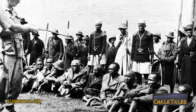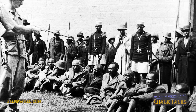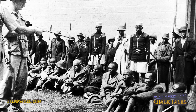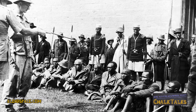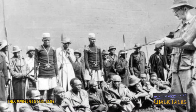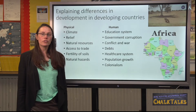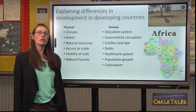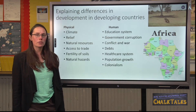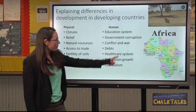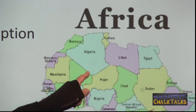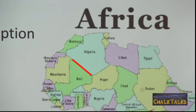One human factor that has made it difficult for many developing countries is their history. For example, modern-day Ghana was colonised by Britain. The profits from selling Ghana's raw materials such as gold, diamonds and timber went to Britain rather than developing Ghana. In addition, the borders of many African countries were agreed by European powers using rulers and maps without reference to cultural and tribal boundaries — for example, the border between Algeria and Mali is just a straight line.